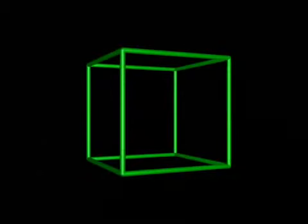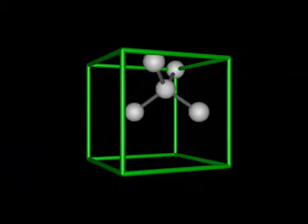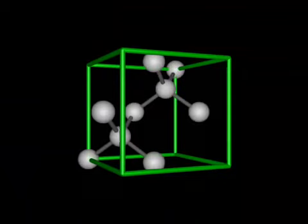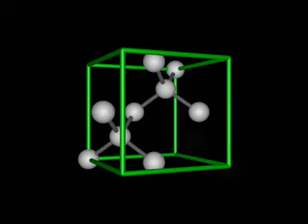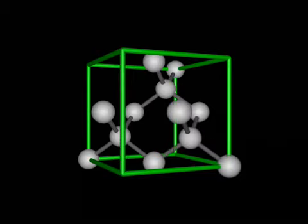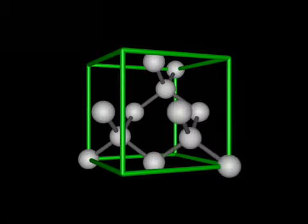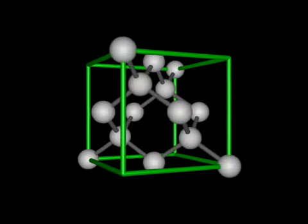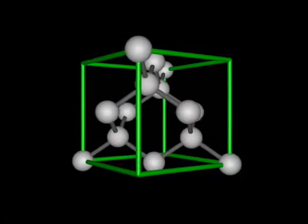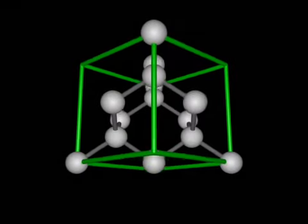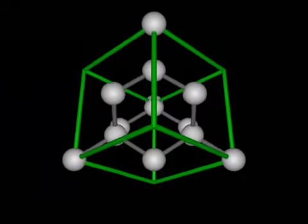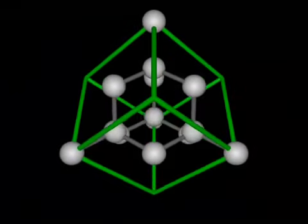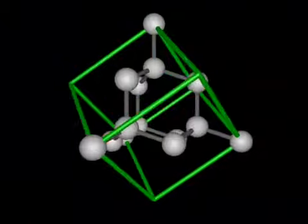The diamond structure can also be visualized as a cubic. Here we show the same four tetrahedra as in the last example, but inscribed inside the four opposite corners of a cube. This generates the same tetrahedron as shown before, only inscribed inside a cube.